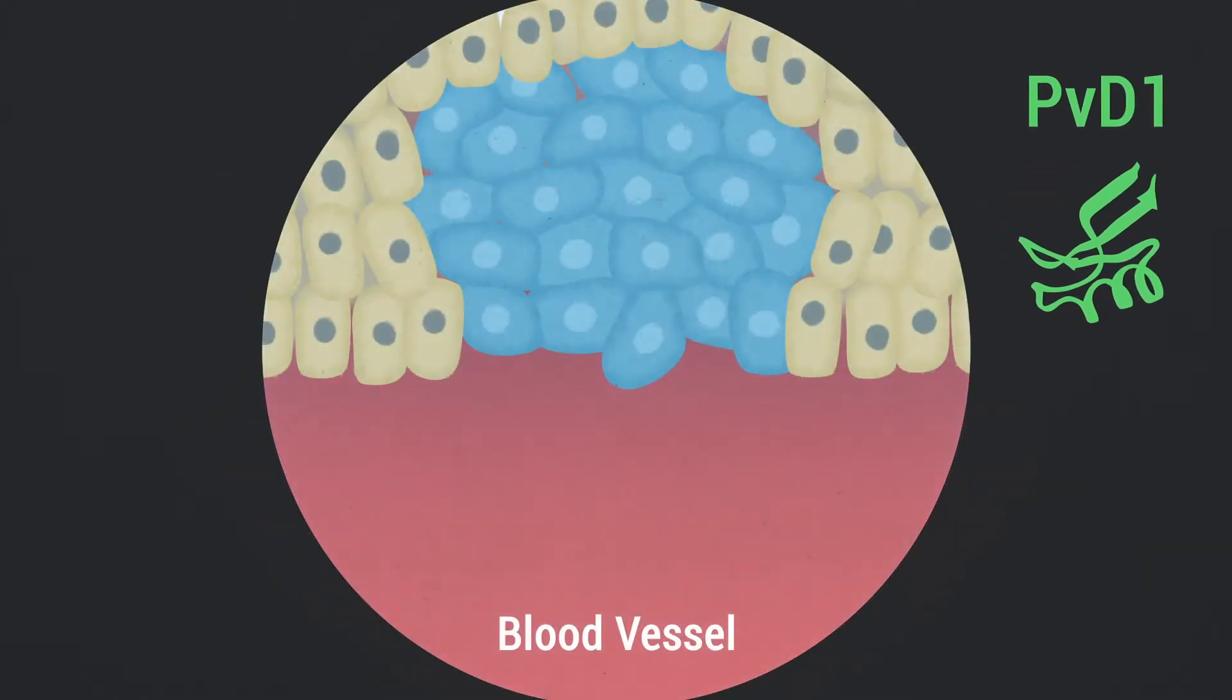Our results suggest that PVD1 quickly internalizes in cancer cells but remains located in the membrane of normal cells with no significant damage to its structure and biomechanical properties.